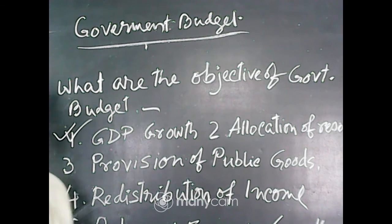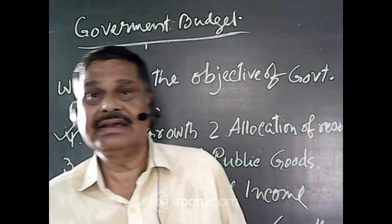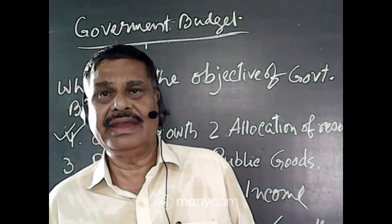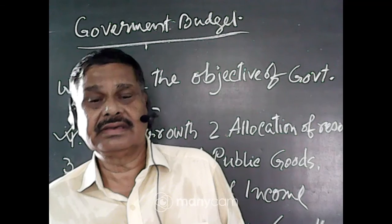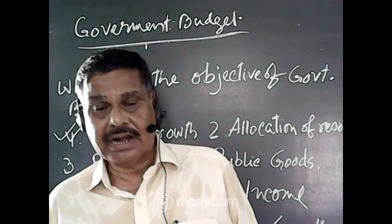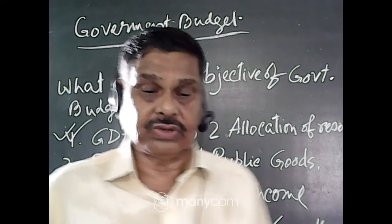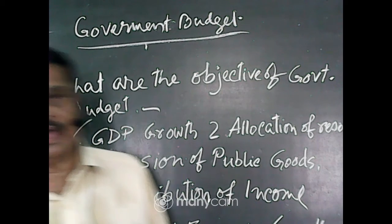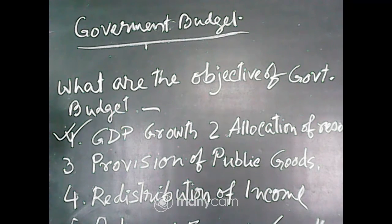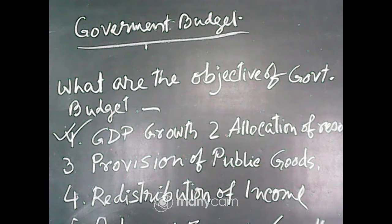The government takes steps so that GDP growth may increase — for instance, investing in different sectors of the economy. The income of the general people should be enhanced so that expenditure increases, because if expenditure does not increase, development cannot take place. GDP is also defined as the market value of all final goods and services in a financial year, which gives us the national income of a country.